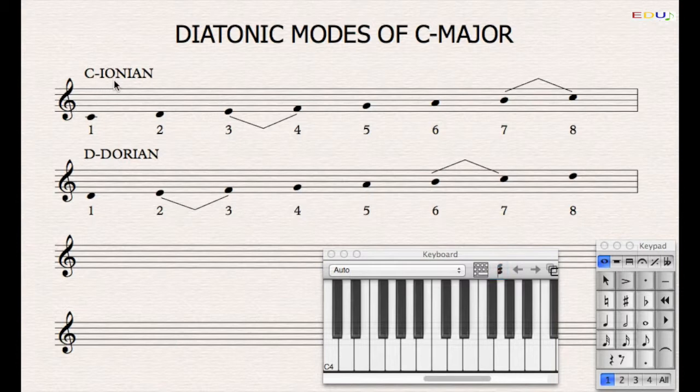Now we shifted the C Ionian scale from C to C to D to D. We saw that the semitone position changes, we get a different sound, and we named this scale the Dorian scale.